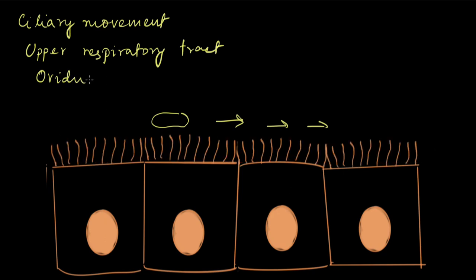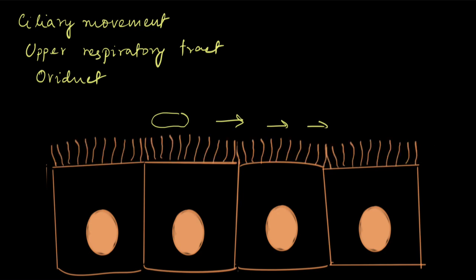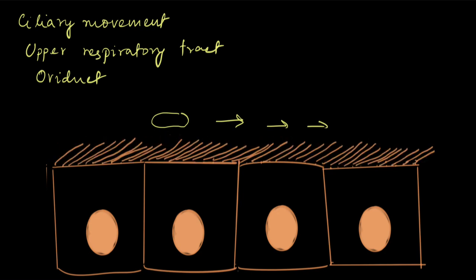The other place where cilia are found is the oviduct or the fallopian tube. The egg that is released every month in the oviduct moves along the oviduct and waits for the sperm. The movement of the egg is caused by the sweeping action of the cilia.